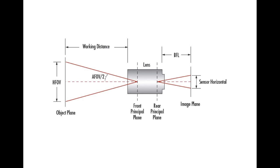By changing the focal length, you can either capture a wider cone of light for wide-angle or a narrow cone zoomed in for telephoto.